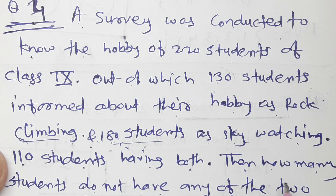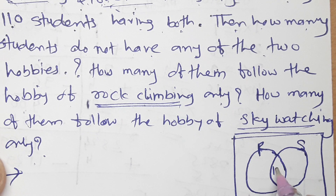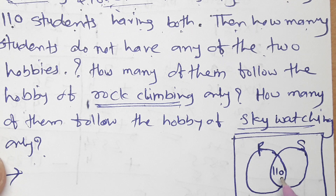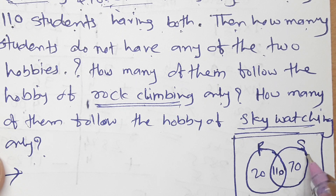The common (intersection) is 110. Rock climbing total is 130, minus 110 common, so only rock climbing is 20. Sky watching total is 180, minus 110 common, so only sky watching is 70.